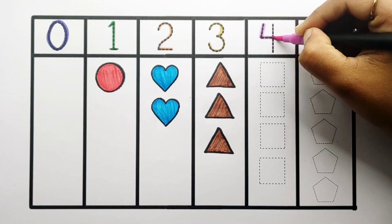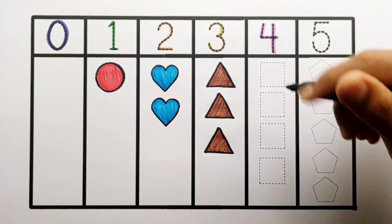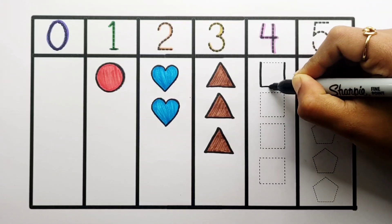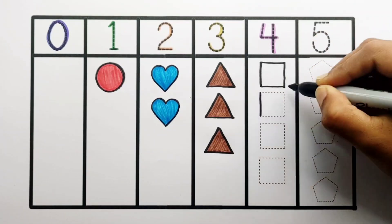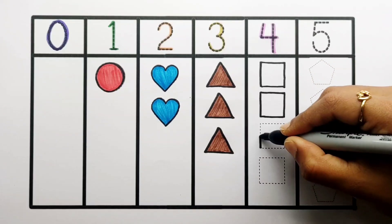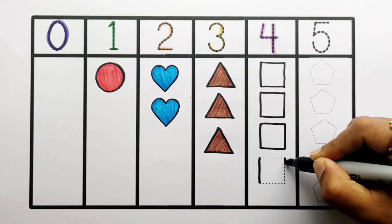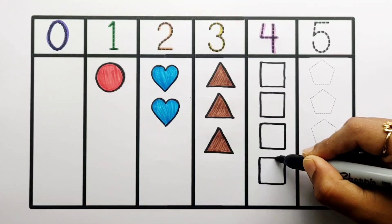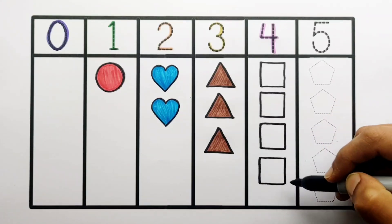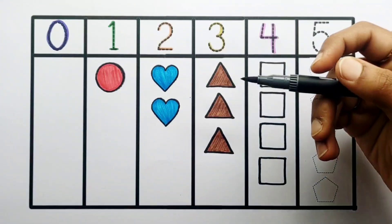Number 4: 1, 2, 3, 4, four squares, gray color.